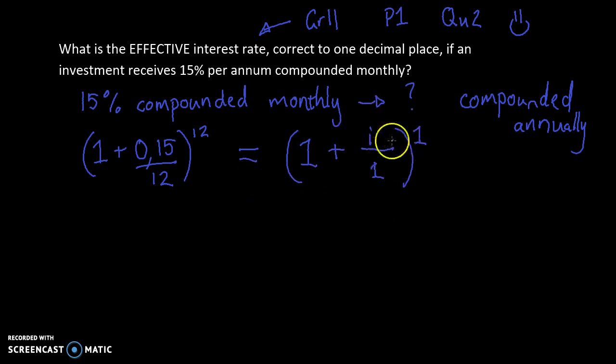And now it's just a matter of solving for that I. That's pretty easy when we start to think about it like that. So we have (1 + 0.15/12)^12 = 1 + I. Take the 1 over to the other side, and we just use our calculator.